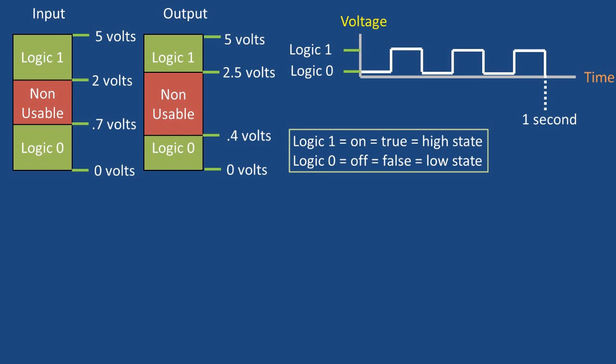When a computer operates off of ones and zeros, it is using the binary system with Boolean algebra, which we will go over in a later video. These logical one and zeroes reach a computer chip through a square wave pattern depicted at the top right of the screen.